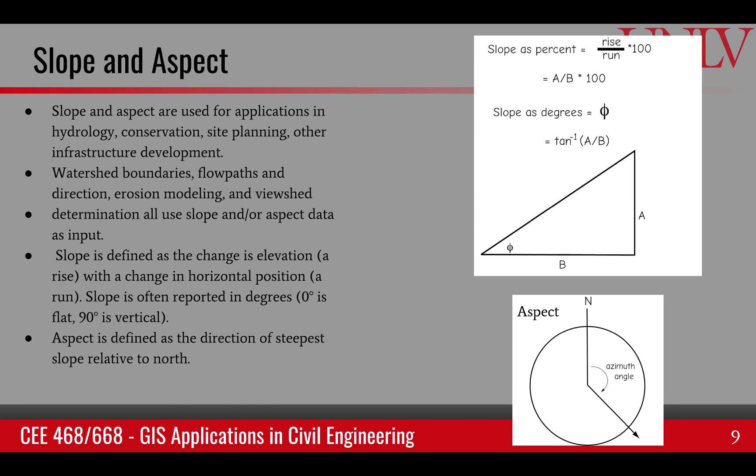For example, watershed boundaries and flow paths and directions can be determined using slope and aspect.